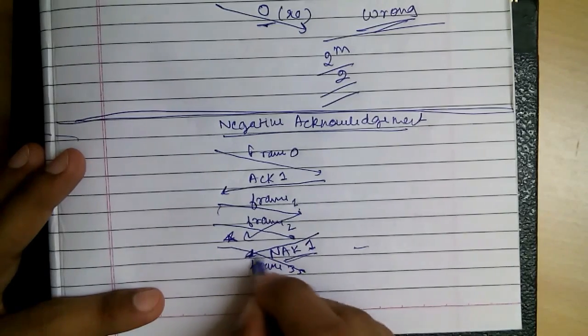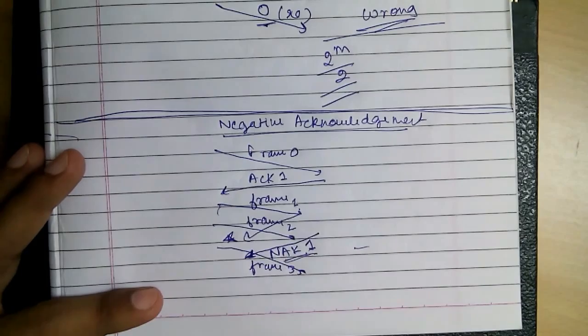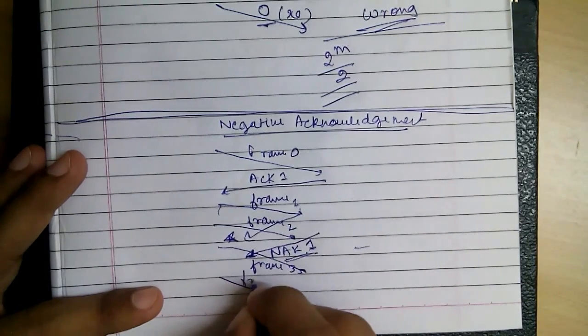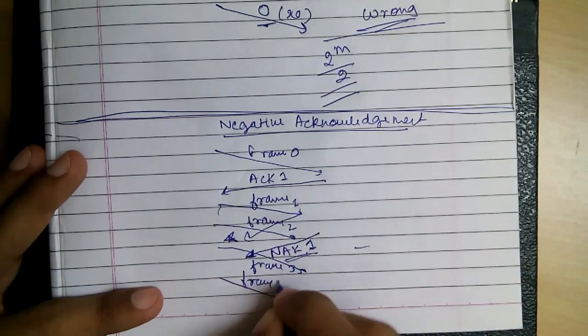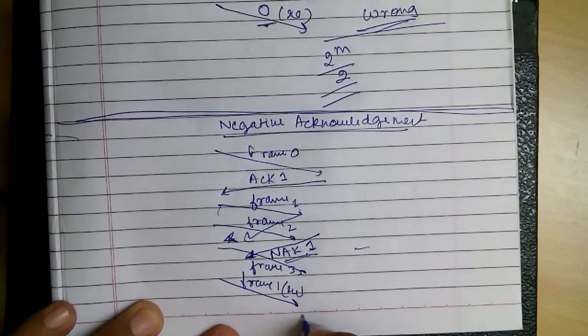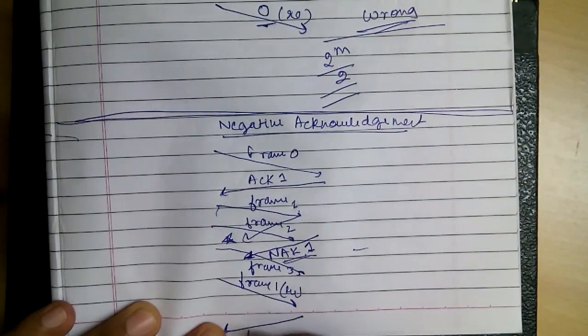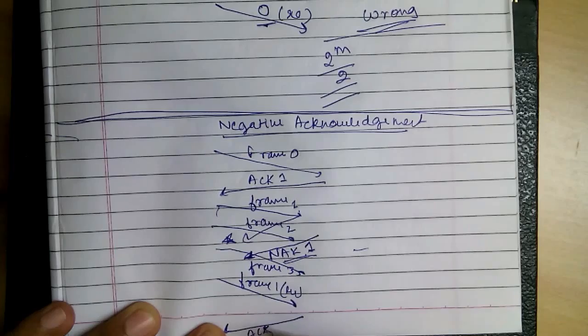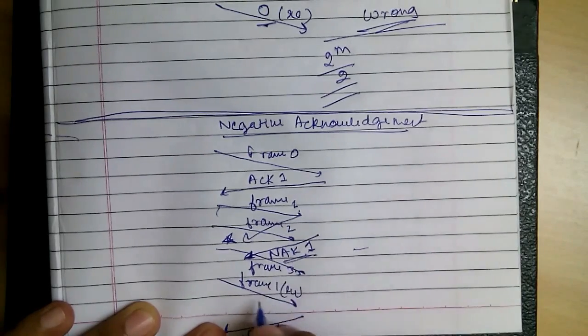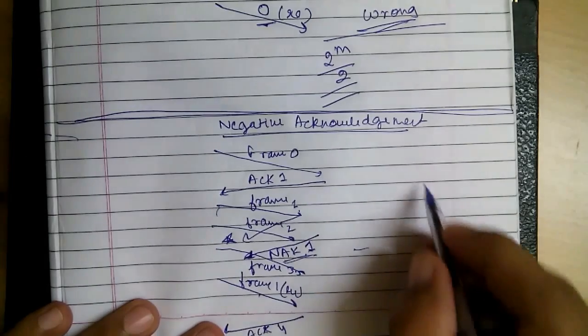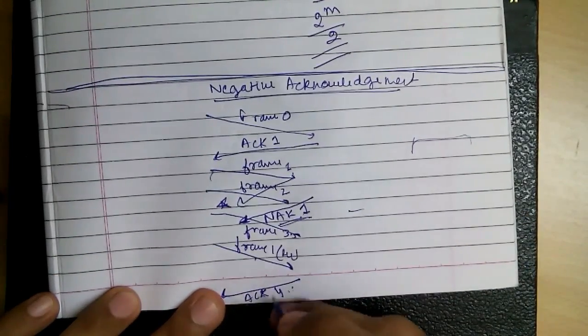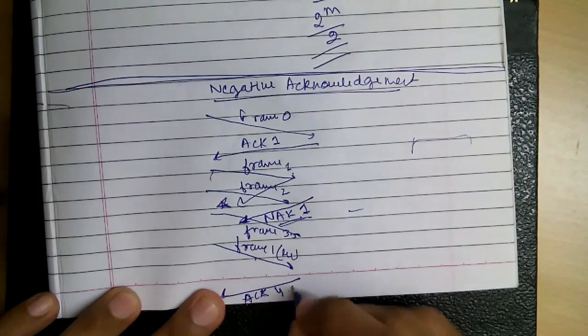So when we receive this negative acknowledgement of 1, we know that 1 is not received, so we will resend it. And then we can get the acknowledgement 4, as we have sent 3 already, then 1 again, and the whole window is fulfilled. So we get a cumulative acknowledgement of 4.